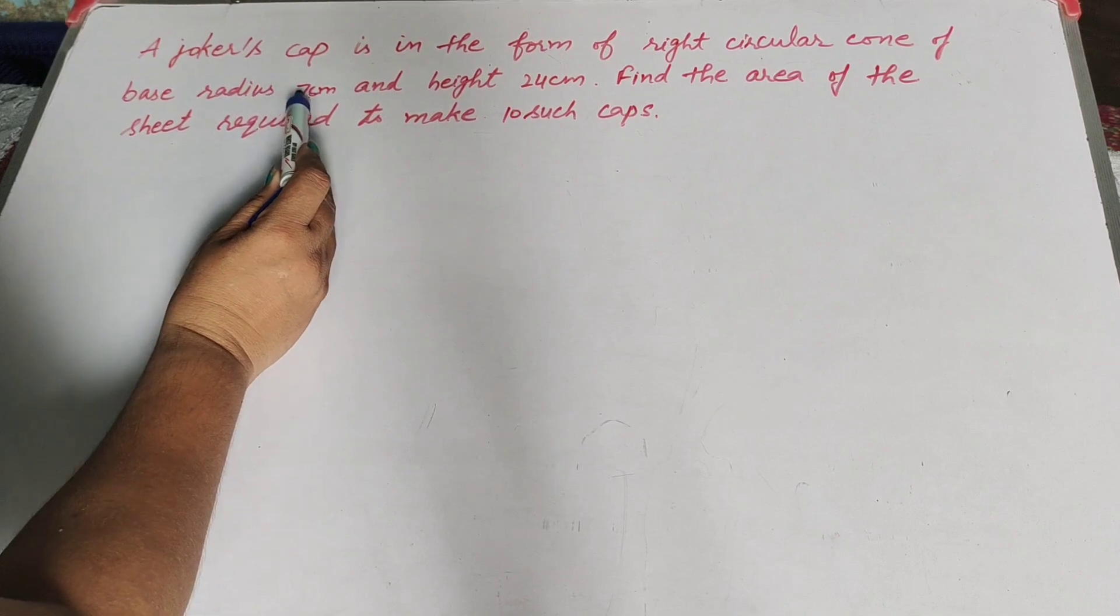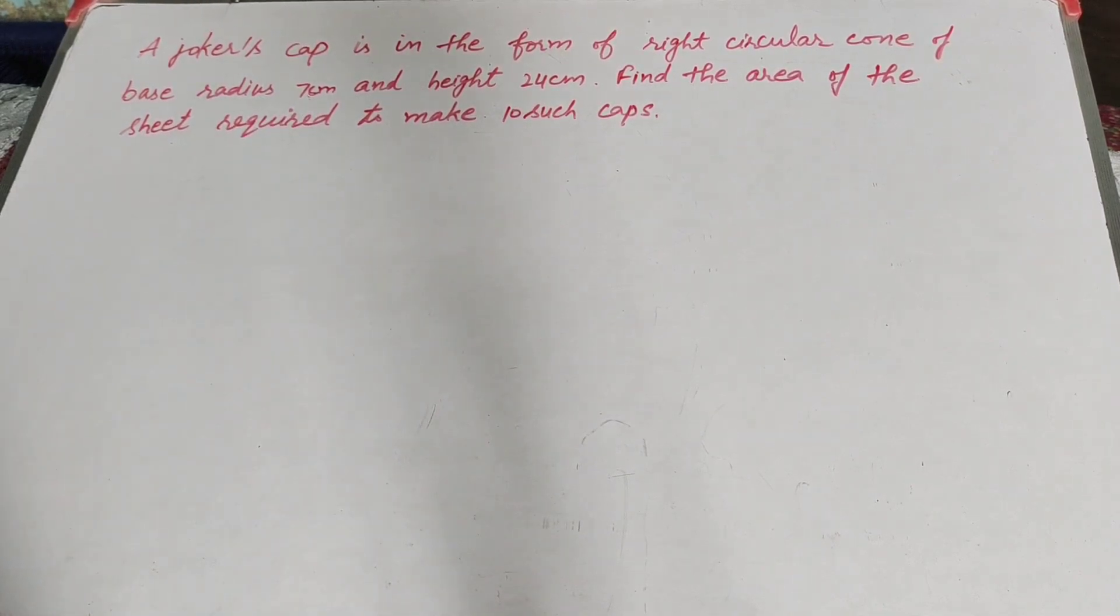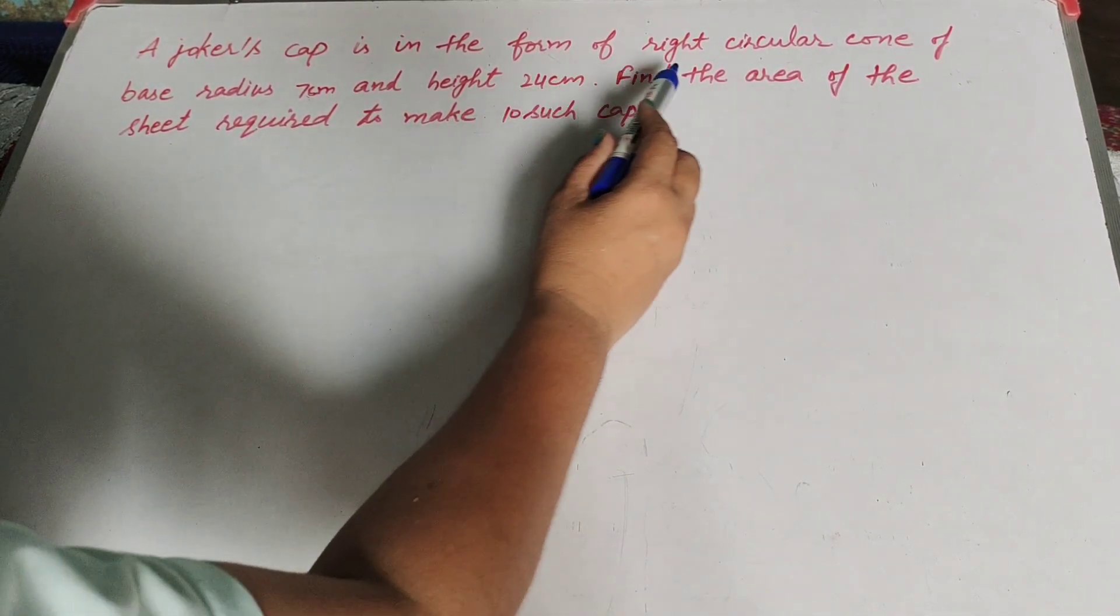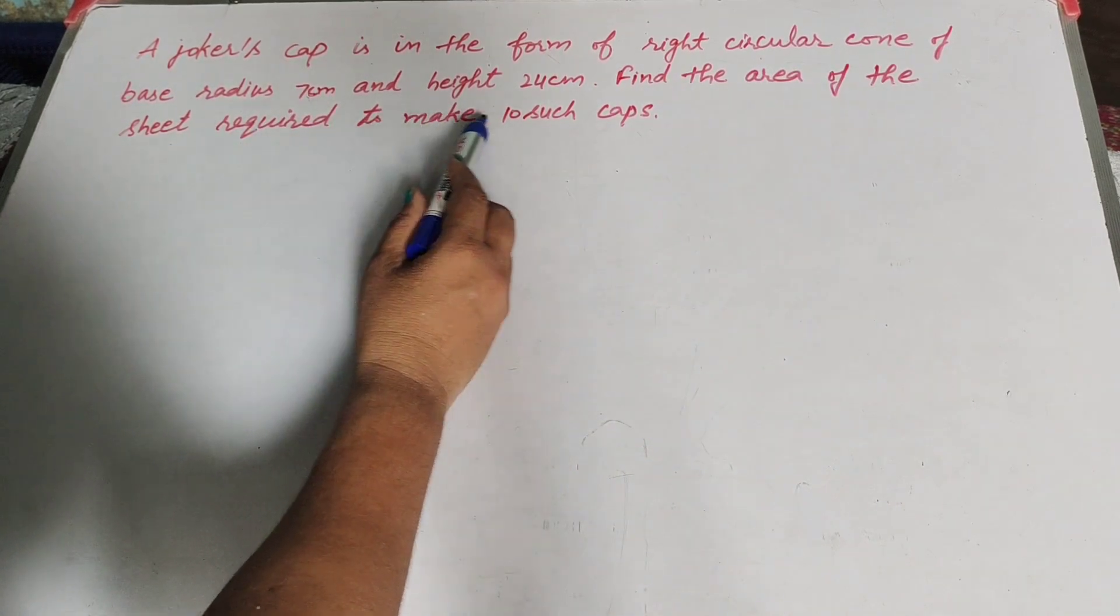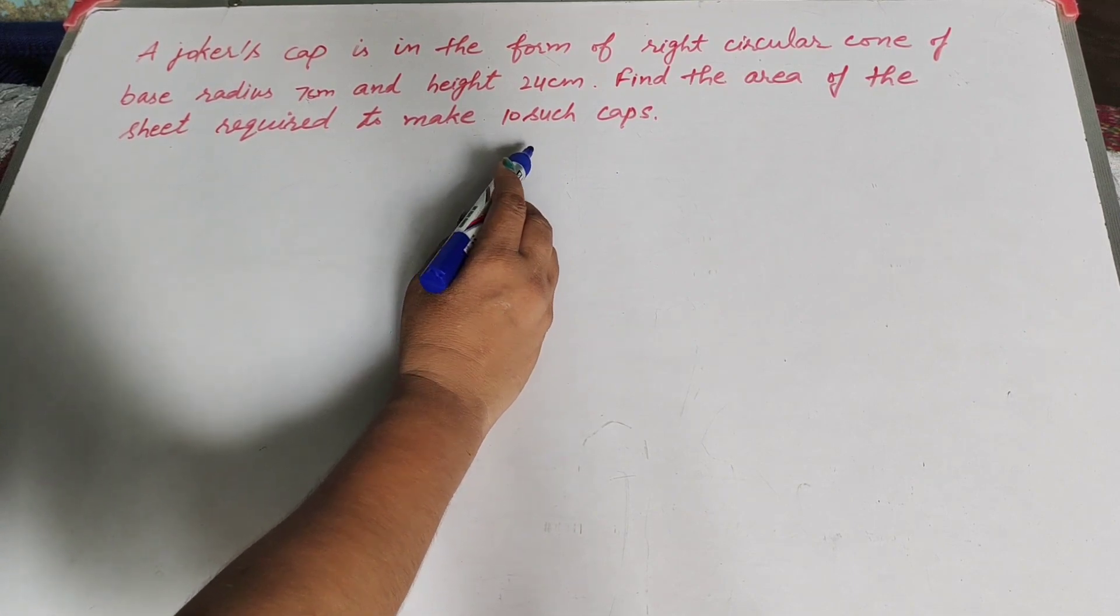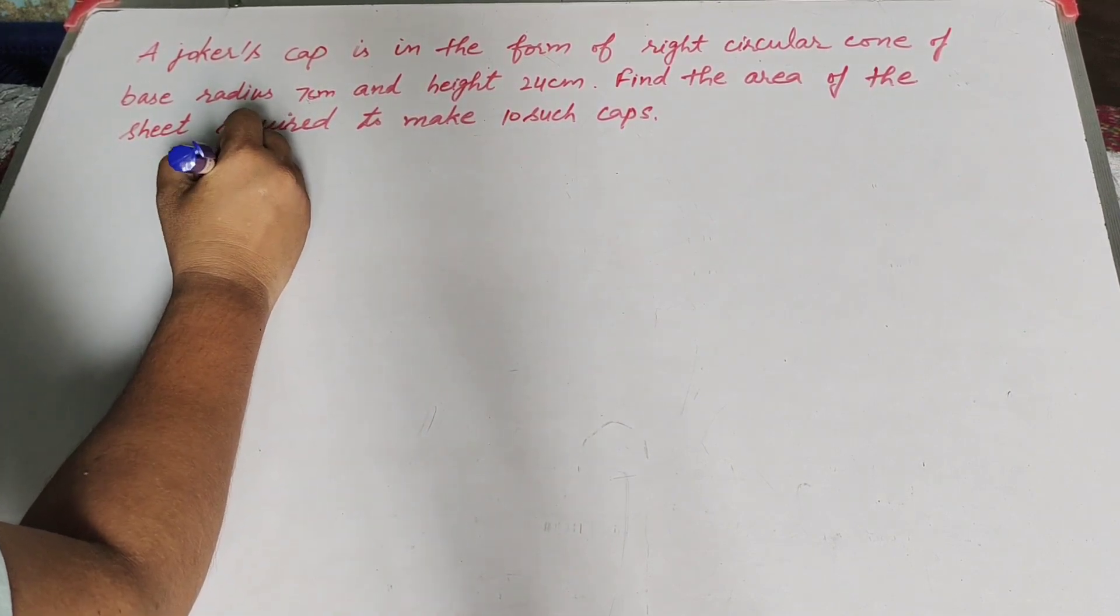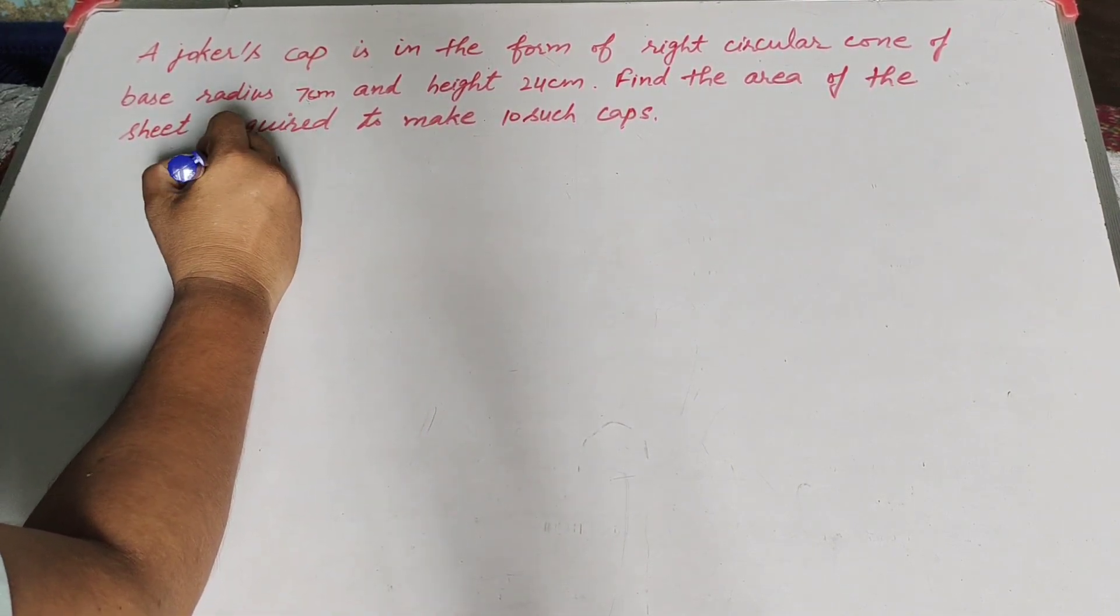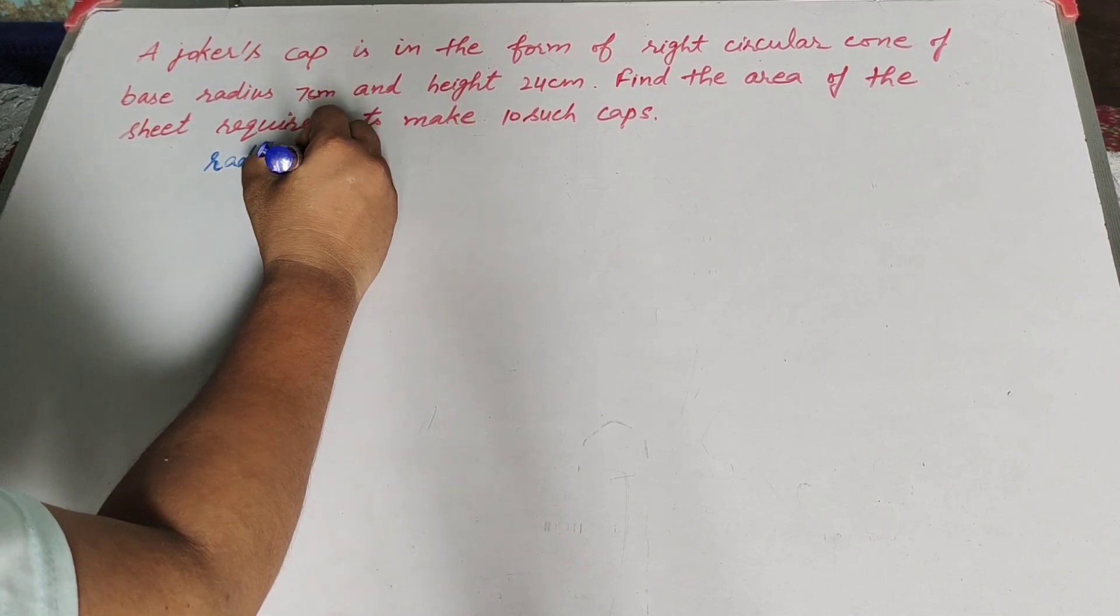In this question, given is a joker cap of radius 7 cm and height 24 cm, but that is a right circular cone. Find the area of the sheet required to make 10 such caps, so we need to find its curved surface area.